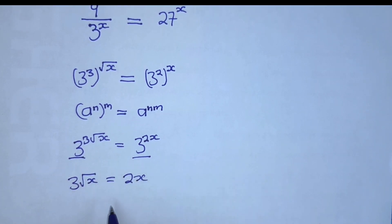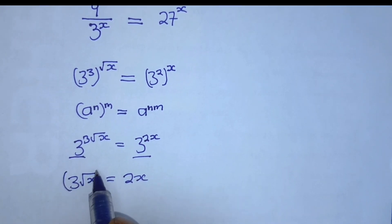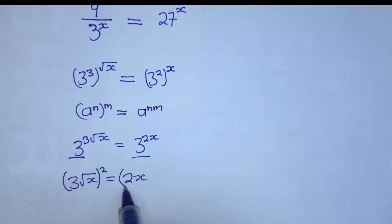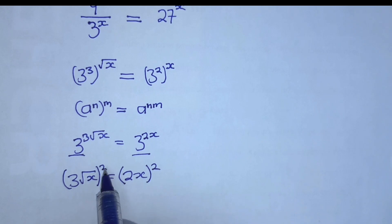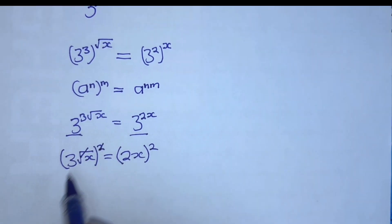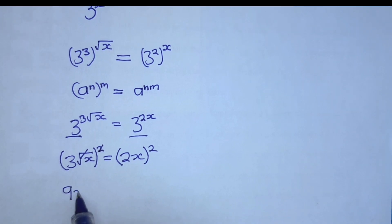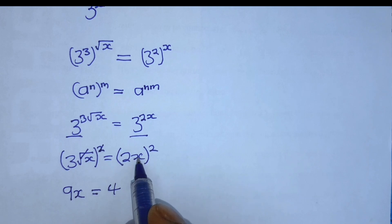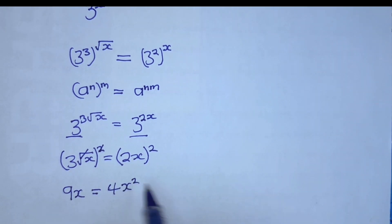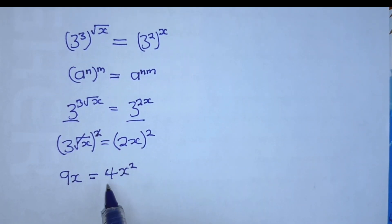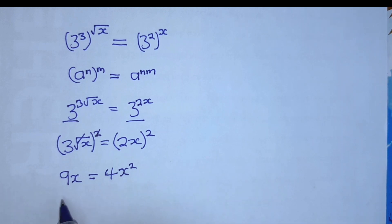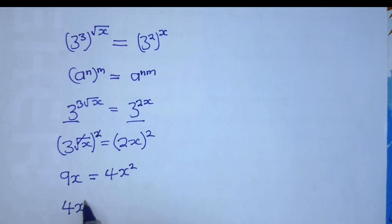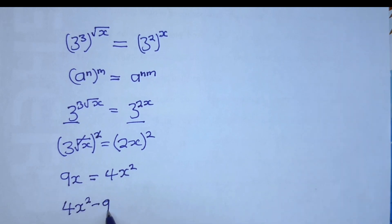Then square both sides. The squaring cancels the square root on the left, and also the 3 becomes 9. So we have 9x which is equal to 4x squared. Move everything to the right and set it equal to 0.